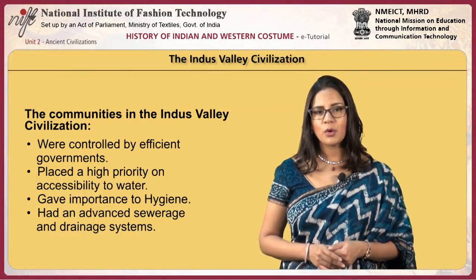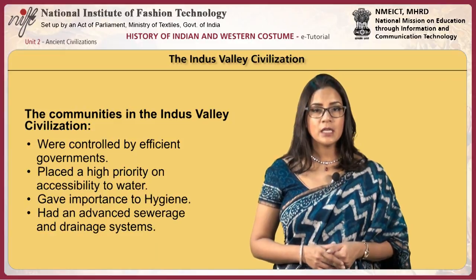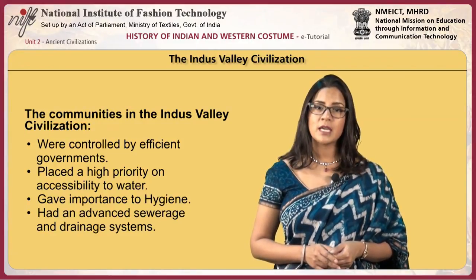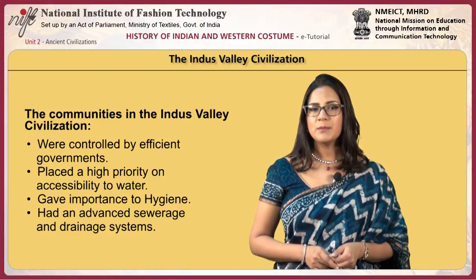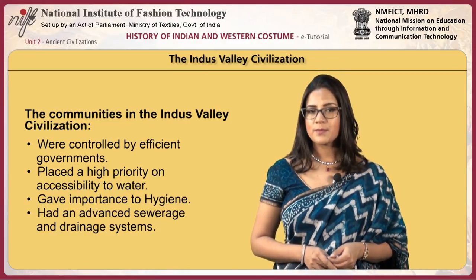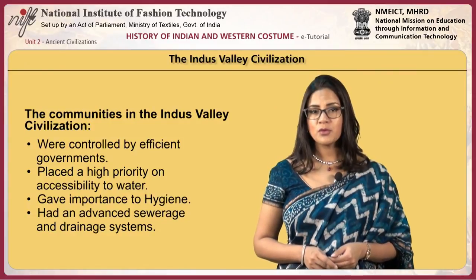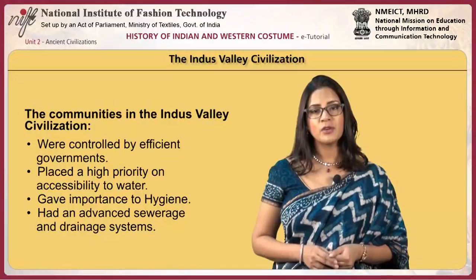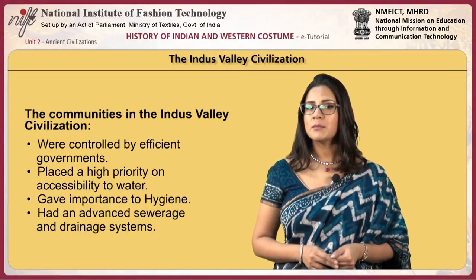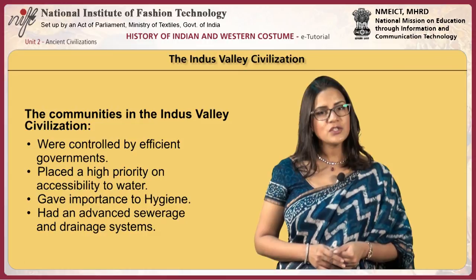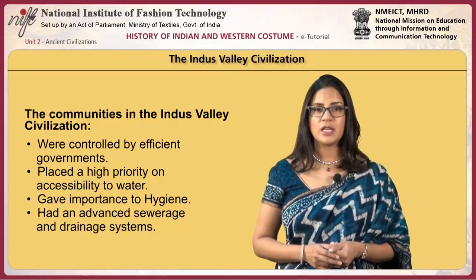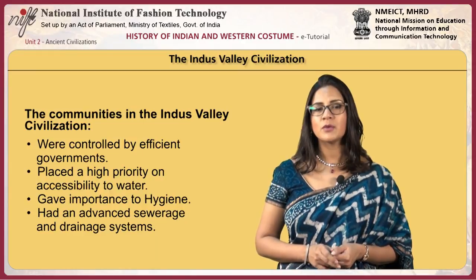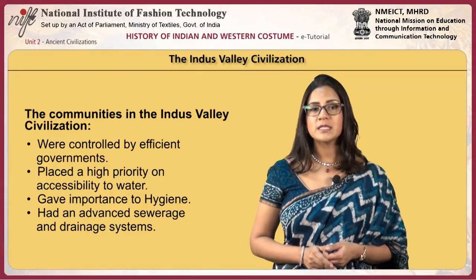Hygiene was also important to the inhabitants. The urban planning included the world's first known urban sanitation systems. Within the city, people obtained water from wells, and within their homes, some rooms had facilities in which wastewater was directed to covered drains that lined the major streets. These ancient Indus sewage and drainage systems were far in advance of anything found in contemporary urban sites in the Middle East.